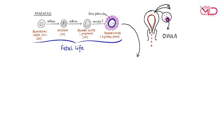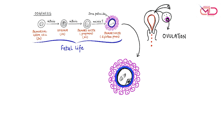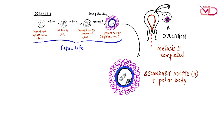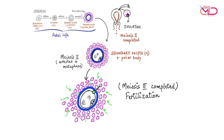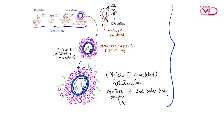This part of development takes place during fetal life. Further development will resume only when puberty sets in, and during the timing of ovulation, the primary oocyte completes its first meiotic division to give rise to a secondary oocyte containing half the number of chromosomes; the remaining half is released as the first polar body. This secondary oocyte also enters the second meiotic division but gets arrested in metaphase. It is only when sperm penetrates the egg during fertilization that the second meiotic division is completed, releasing the mature oocyte and the second polar body.